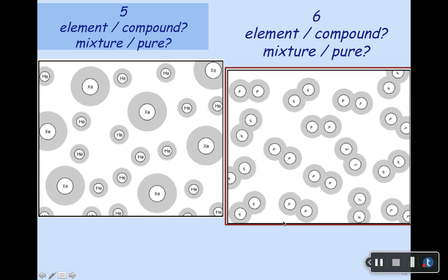One more pair of examples. On the left: mixture or pure? Is what you see in the box all the same thing? I can identify one thing that says He and another that says Xe. If you look at your periodic table, you'll recognize those are two different elements in the rightmost column. He is element number two — helium — and Xe is xenon, element 54. So there are two different elements in there, and therefore it has to be a mixture.